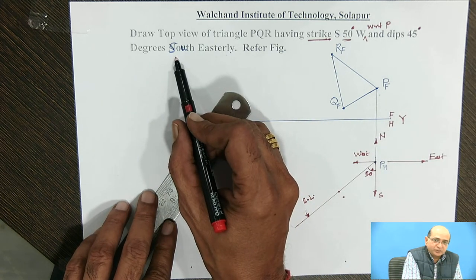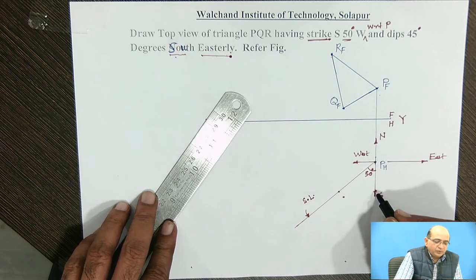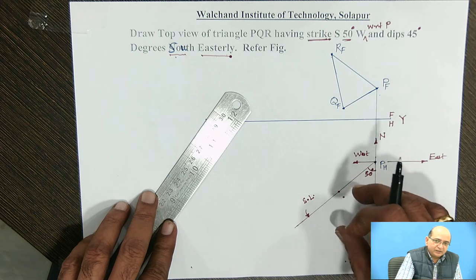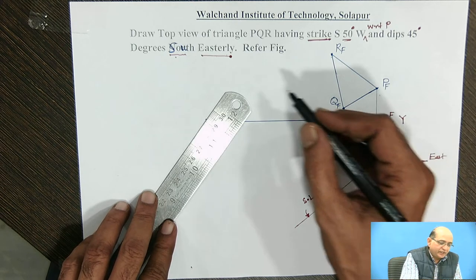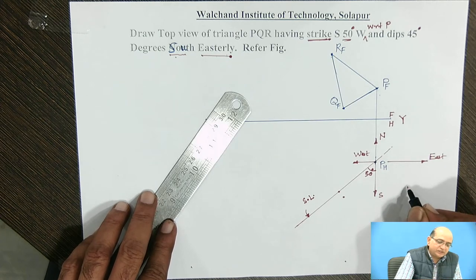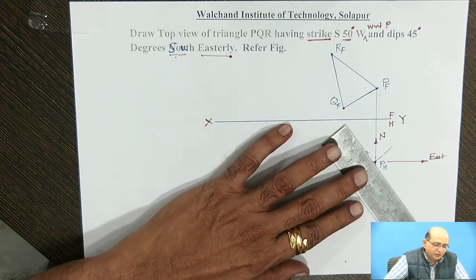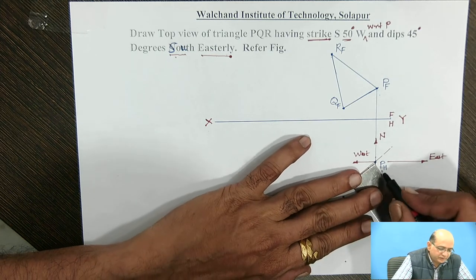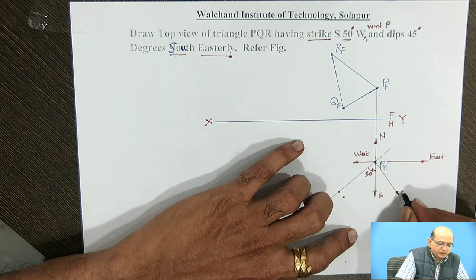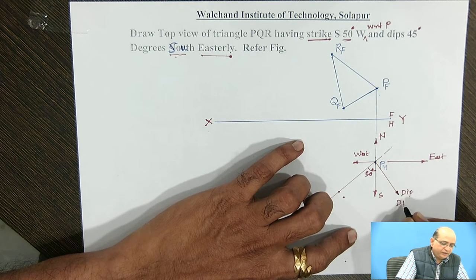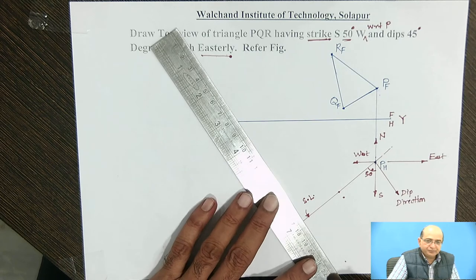The dip direction given — south easterly — is also important. We have to complete the dip direction line in the plan as a line perpendicular to the strike line. The strike line is completed at a 50 degrees angle. The dip direction is south easterly, meaning from south towards east we have to complete the perpendicular line from the P point or any location on the strike line. We will take the line perpendicular to the strike line with respect to P. This is the dip direction in which the plane should have the downward inclination, and for that purpose we will see how to complete the edge view of the plane first.